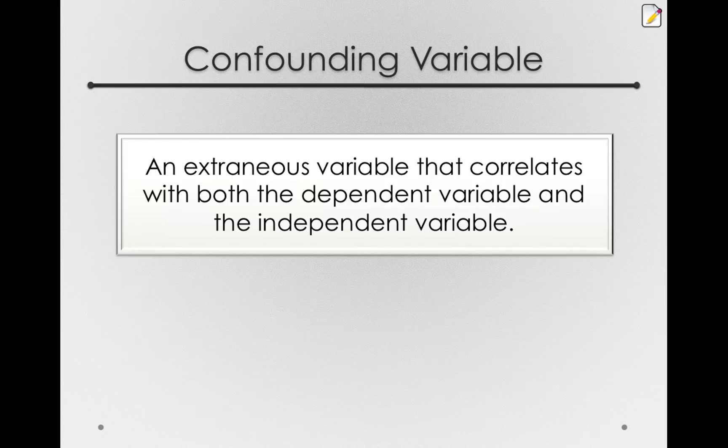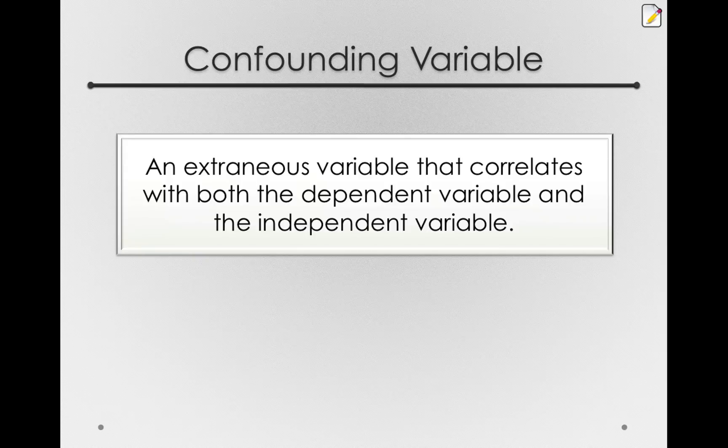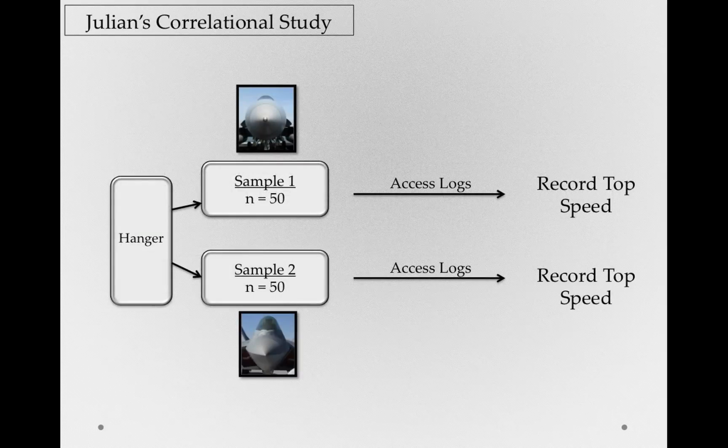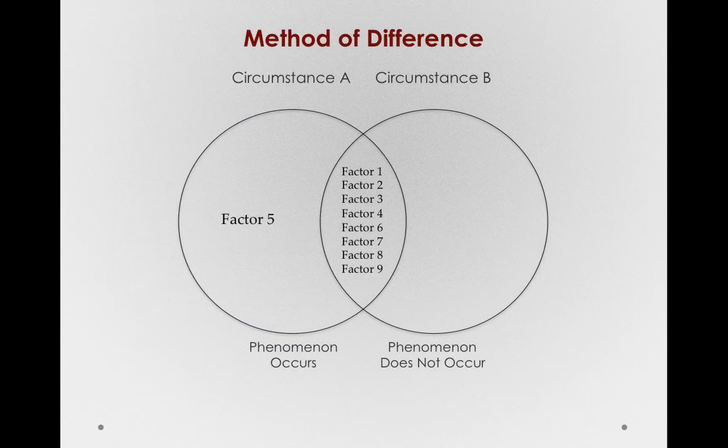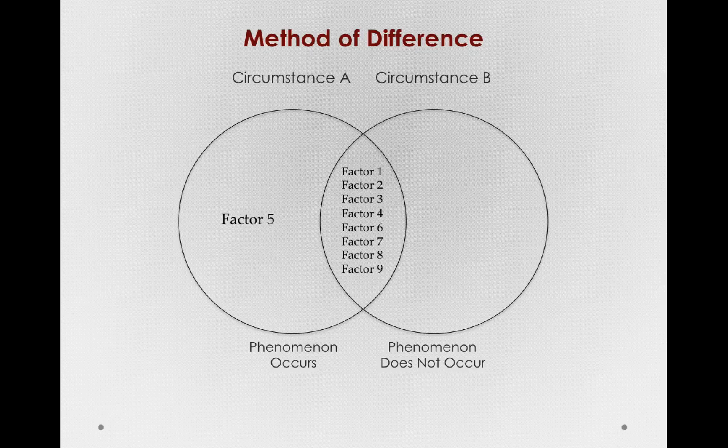Because notice, if planes that have the F18 type nose tend to have smaller engines, then when we measure nose type, we're actually wrapping in the effect of the confounding variable. This is a problem for us because we can't distinguish what is actually causing the effect on top speed. If we look at the method of difference, which is what we're trying to apply here, we don't have a circumstance where everything is in common except for nose type. Instead, what we have is a confounded study.